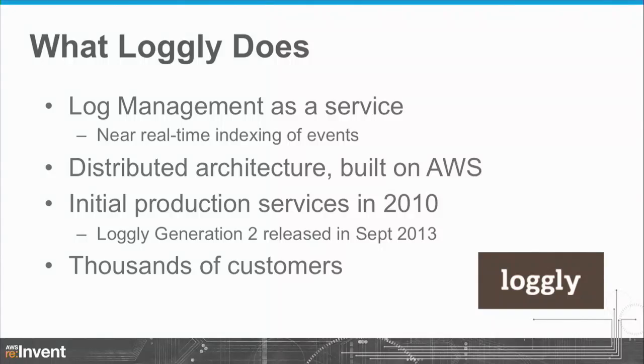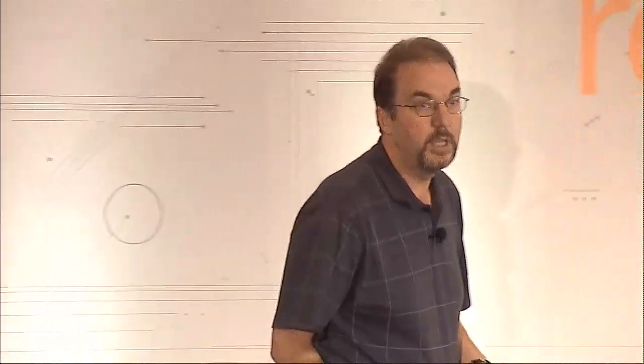Let me just spend a couple moments and talk to you about what Logly does. We're a log management as a service company where customers send us log events in real time and we provide the infrastructure to index those and a web application that lets you search and gain insights from that. We're a distributed architecture built from the beginning using AWS. Our initial production services were offered in 2010, our first generation services, and just a couple of months ago we introduced our second generation of Logly with a brand new event ingestion infrastructure. We have thousands of customers, a lot of them cloud customers.